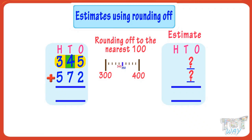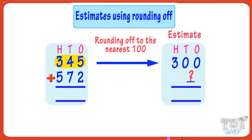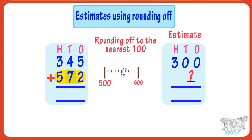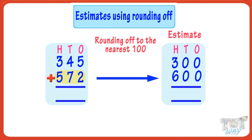In 345, the tens digit is 4, which is less than five, so we round down to the previous 100 — that is 300. In 572, the tens digit is 7, which is more than five, so we round up to the next 100 — that is 600. So 345 rounds down to 300 and 572 rounds up to 600.